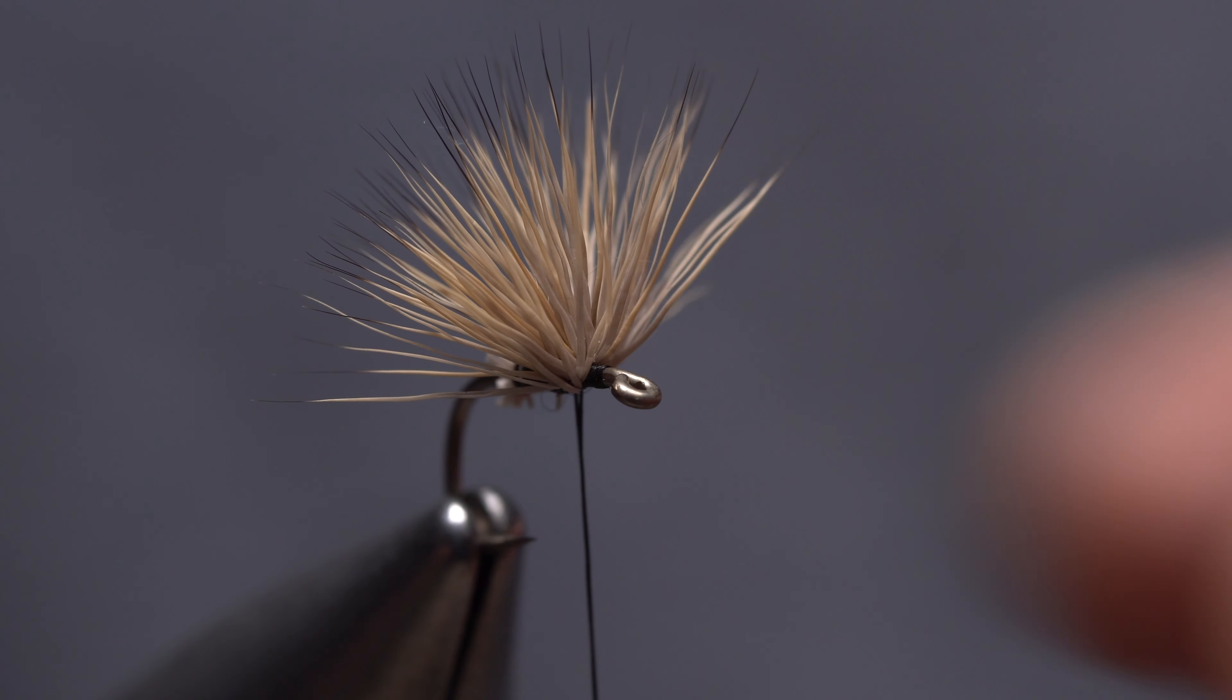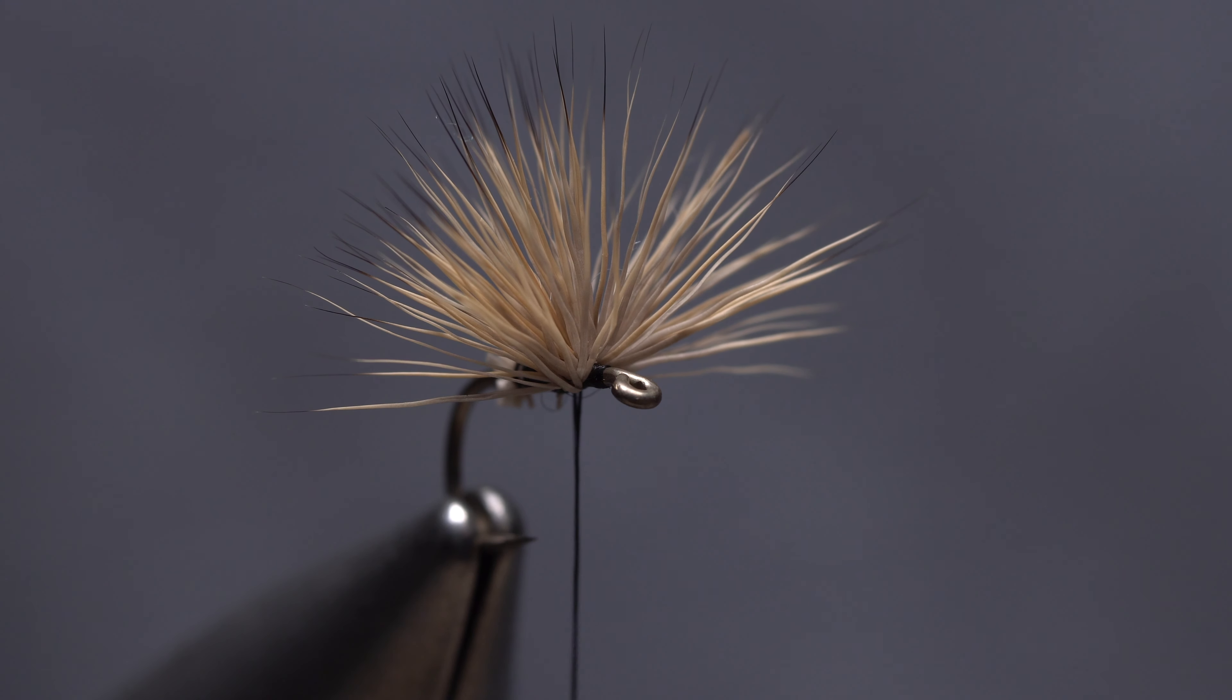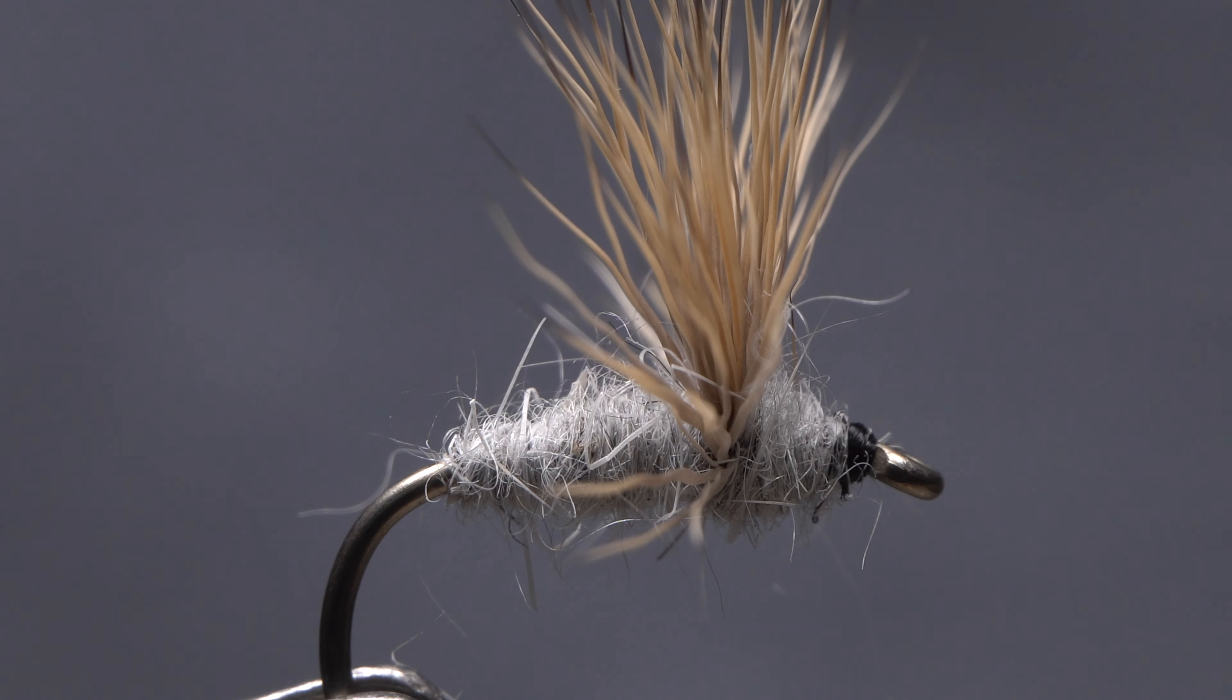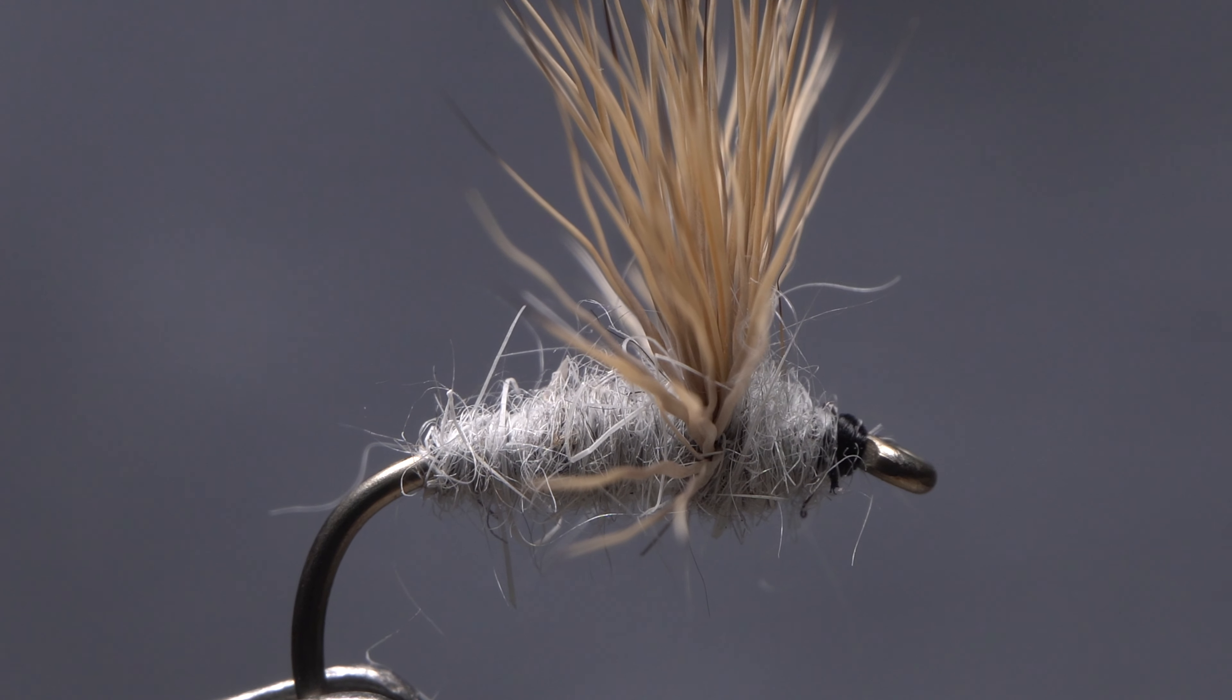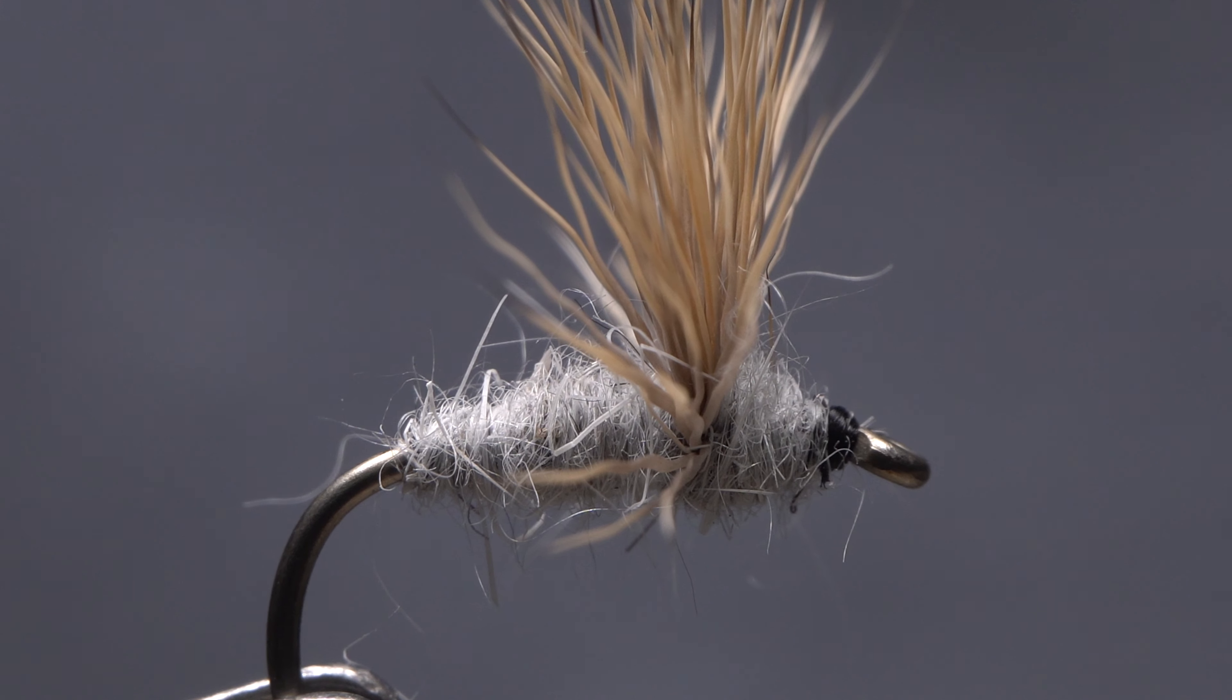You can then fan the hair out to cover a full 180 degrees. To keep the hair from tilting forward over time, brace it both front and back with tight wraps of a dubbing noodle.